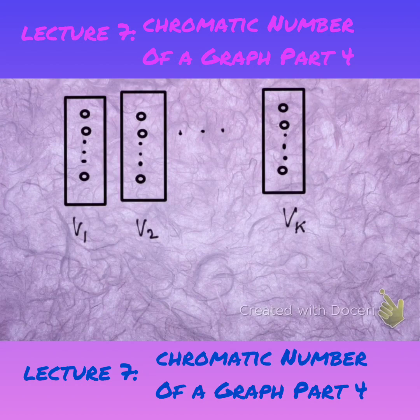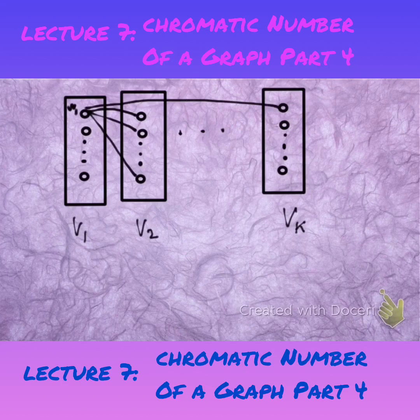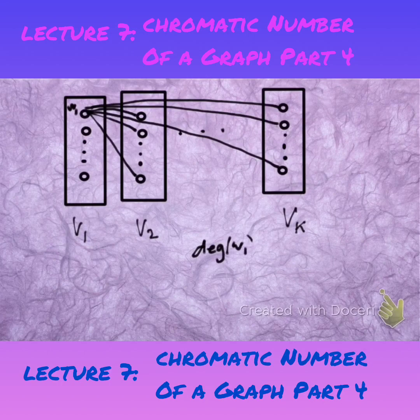So there we have our diagram. If we look at the first vertex in the set V1, what is its maximum degree? At the very worst, it is adjacent to all the vertices in the graph with the exception of the vertices within the set V1. So basically the degree of W1 is at most N minus N1. And you can do that for every vertex in G.